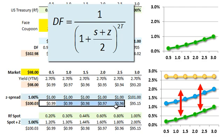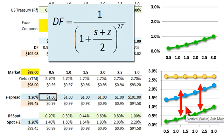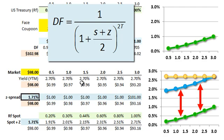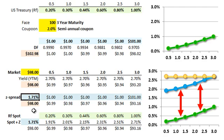At a Z-Spread of 1%, discounting gives a present value of $100.03 — that's not the $98 bond price, so I need to increase the Z-Spread. At 1.2% it's closer but still not right. Iterating up to 1.71%, the Z-Spread added to all spot or zero rates produces a parallel yield curve that includes the credit risk of the bond. Discounting all future cash flows at spot rate plus 1.71% gives a model price of $98, equal to the observed market price.